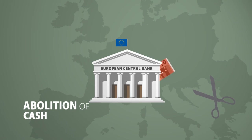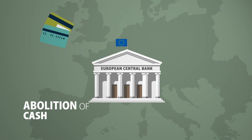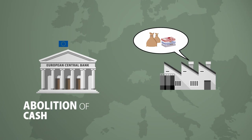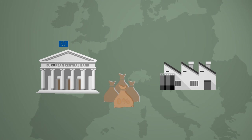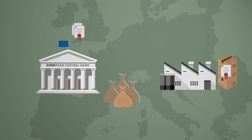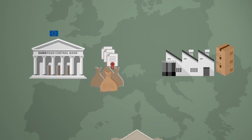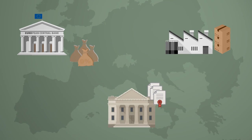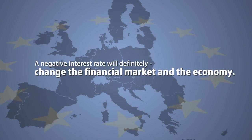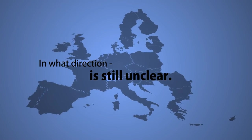Furthermore, banks, businesses and households have to align the provided credit supply with investments and goods demand. If a smooth money cash flow is not guaranteed, then banks, businesses and households will undergo a financial loss while withholding cash. But would this once more restrain private autonomy? Is there also a need for a completely new state organization to manage this conditioned task? A negative interest rate will definitely change the financial market and the economy — in what direction is still unclear.